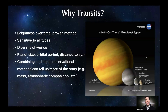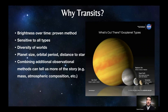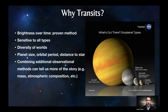Transits are important because it's a proven method, sensitive to all the different types of exoplanets out there, giving us a diversity of worlds. The data can give us the size of the planet, its orbital period — so how long it takes to orbit its star — and its distance to the star. And when we combine the transit data with additional observational methods, it can tell us more of the story of the planet, such as its mass and atmospheric composition.